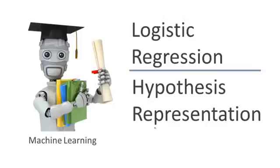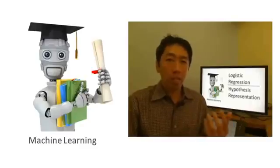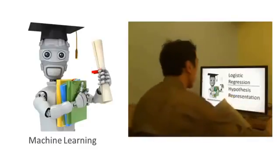Let's start talking about logistic regression. In this video, I'd like to show you the hypothesis representation — that is, what is the function we're going to use to represent our hypothesis when we have a classification problem. Earlier we said that we would like our classifier to output values that are between 0 and 1, so we'd like to come up with a hypothesis where predictions are between 0 and 1.